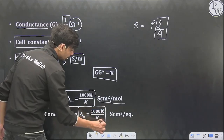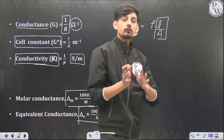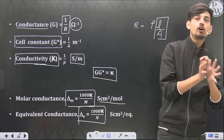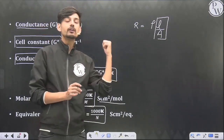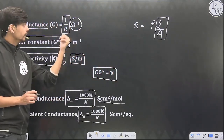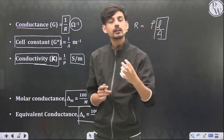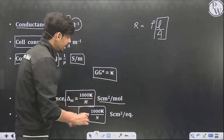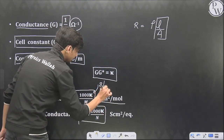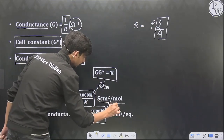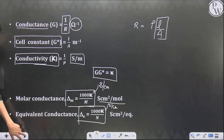Molar conductivity is conductivity per unit mole: Λm = (1000 × κ) / molarity, in the unit of S·cm²·mol⁻¹. For equivalent conductivity: Λeq = (1000 × κ) / normality, in the unit of S·cm²·equiv⁻¹. Questions are directly formula-based; you just put the right value with the right unit. The unit plays a very vital role — kappa must always be in S·cm⁻¹ to get the answer in S·cm²·mol⁻¹. Take careful note of the units.